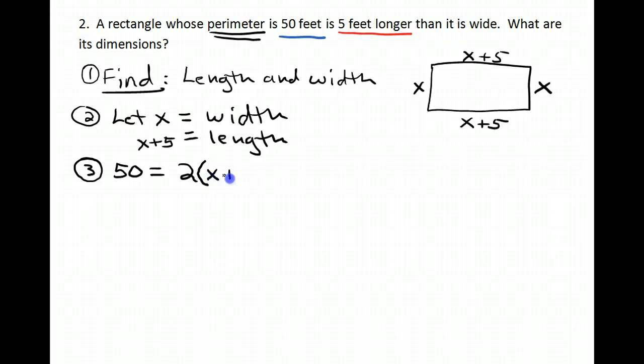2 lengths would be 2 times the quantity x plus 5. You must put parentheses because you need to double the entire length, not just the x portion, plus 2 times the width, which is not w, it's x. And there you have your equation. Now I need to solve that.